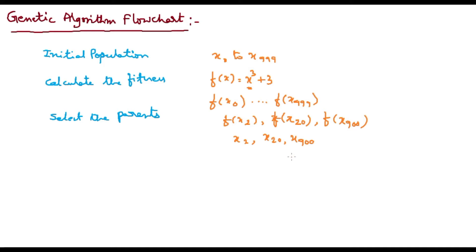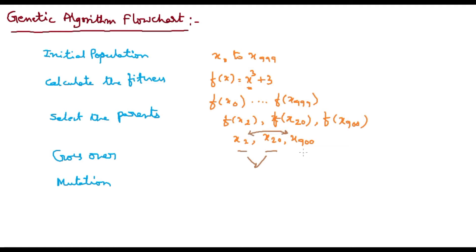Once I identified the parents, now I need to go ahead with crossover. In this video we will see the crossover and mutation. Crossover and mutation are two different things we need to do. Maybe first I take these two as parents and perform crossover and mutation, then take another pair as parents and apply crossover and mutation to get new solutions or to improve the population. Once the population has been improved, I need to see the fitness again.